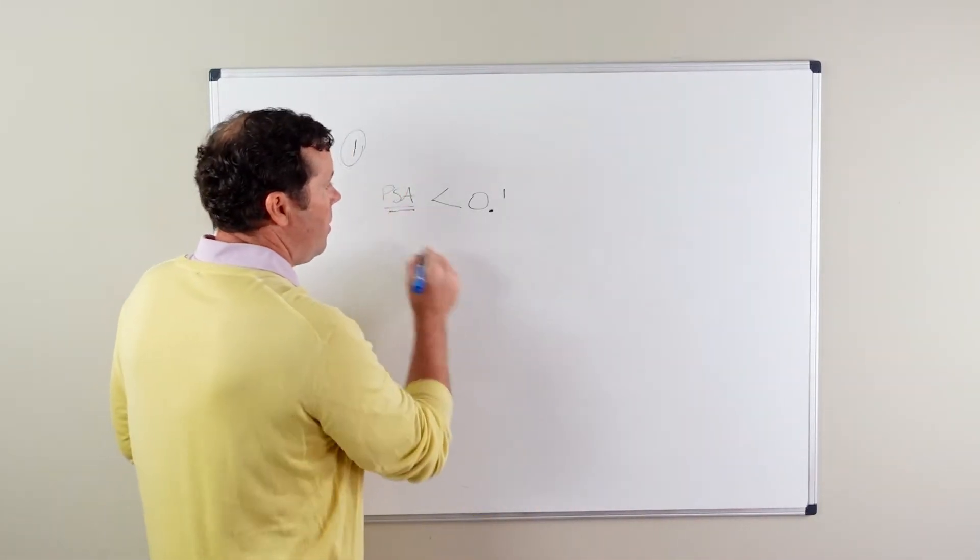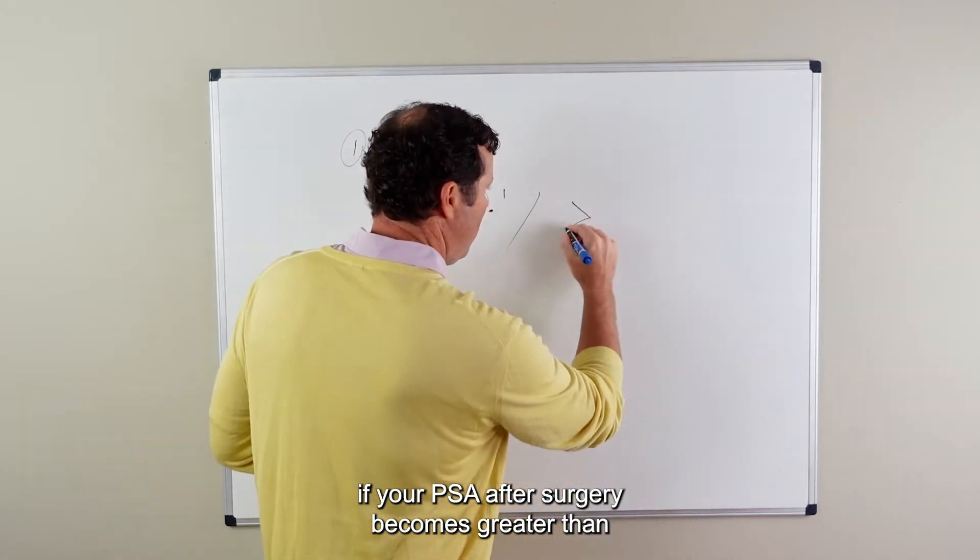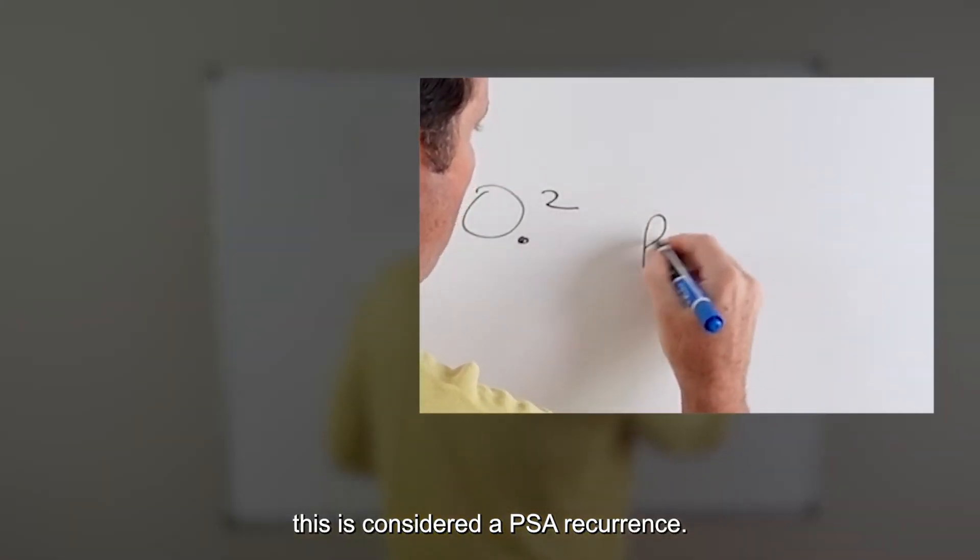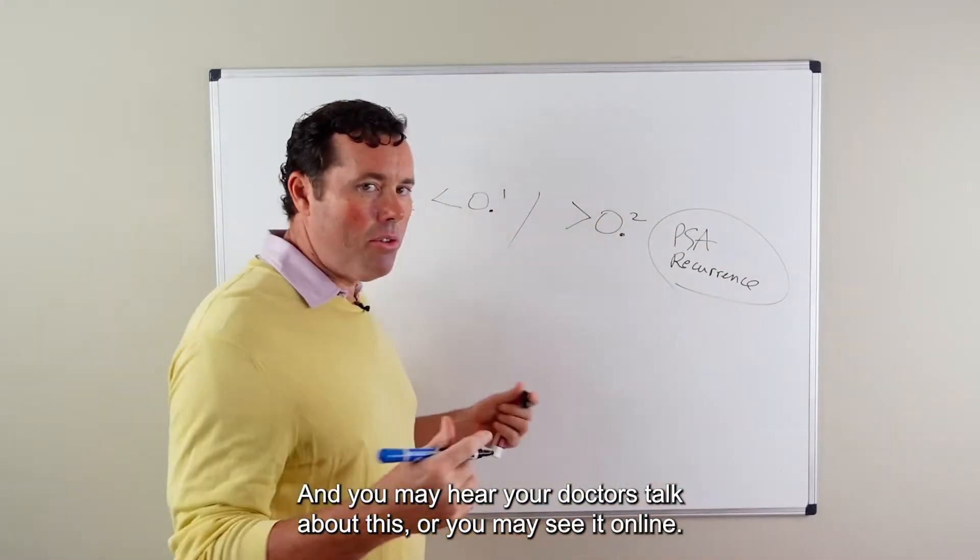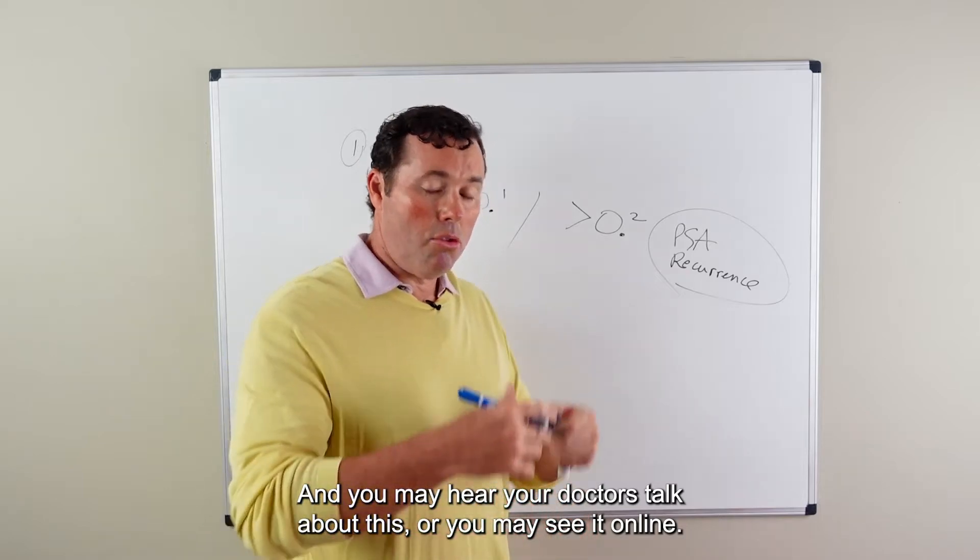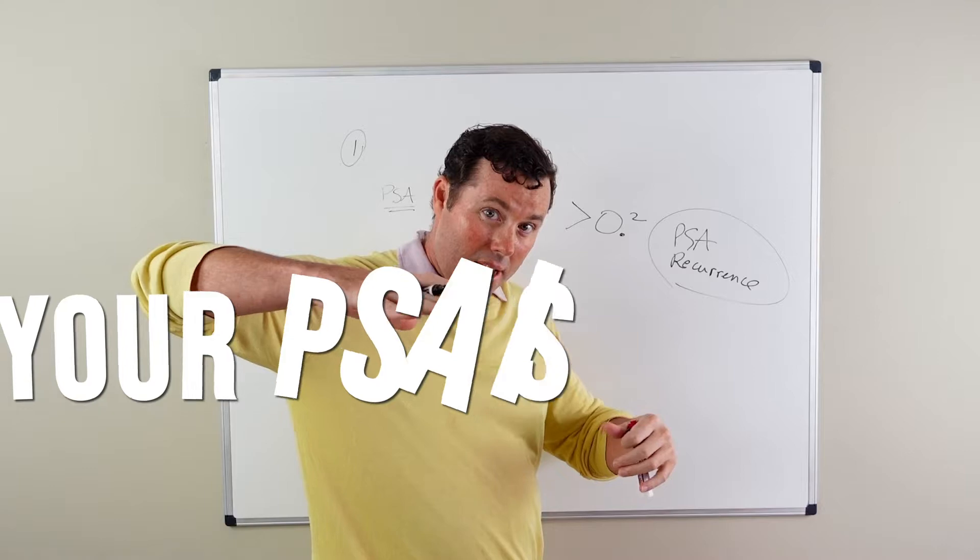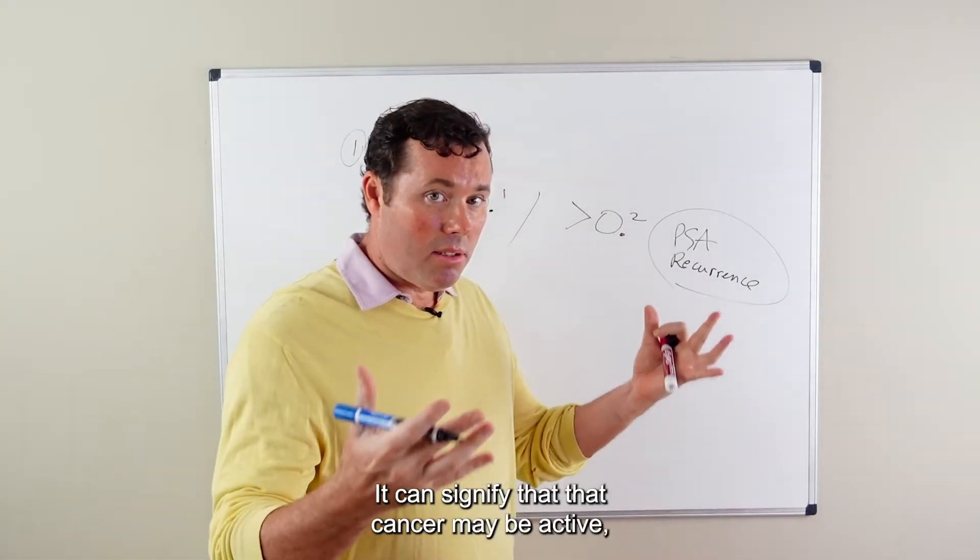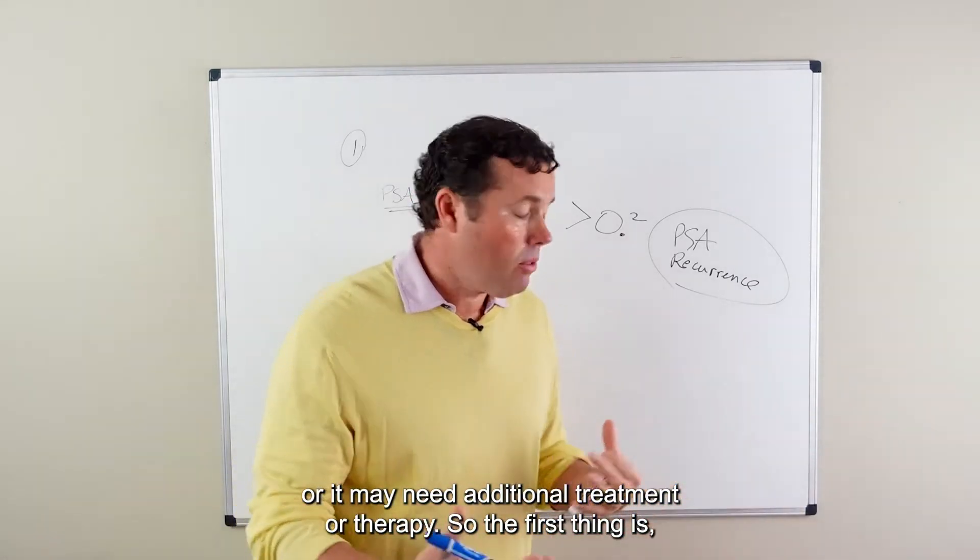So if your PSA after surgery becomes greater than 0.2, this is considered a PSA recurrence. And you may hear your doctors talk about this or you may see it online. PSA recurrence just means that your PSA is going up after treatment and it can signify that that cancer may be active or it may need additional treatment or therapy.